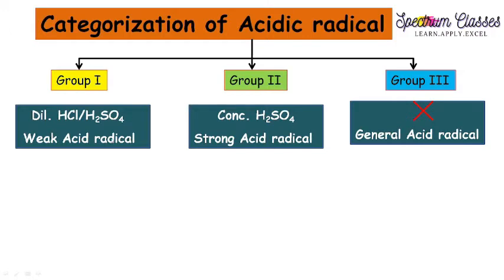How are you going to memorize which is weak, strong, and general? For Group 1, we are using dilute acid — from that you can memorize 'weak acid radical.' For Group 2, we are using concentrated acid — so you can connect it with the word 'strong.' And since Group 3 has no group reagent, we call them 'general acid radicals.'